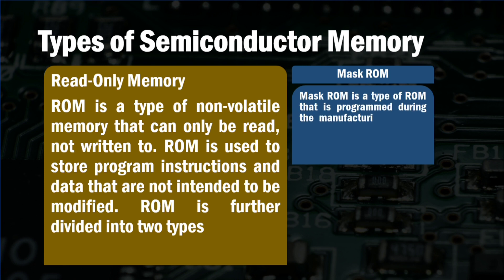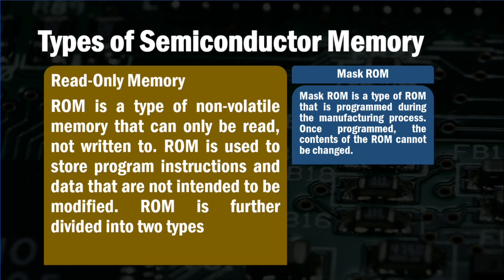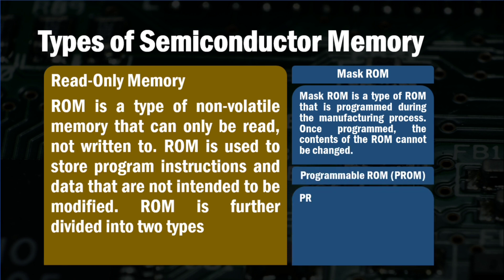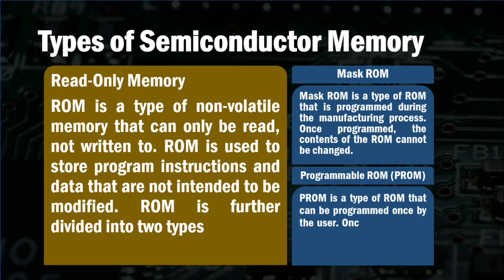ROM is further divided into two types. The first one is mask ROM. Mask ROM is a type of ROM that is programmed during the manufacturing process. The content of the ROM cannot be changed.